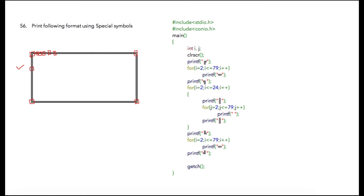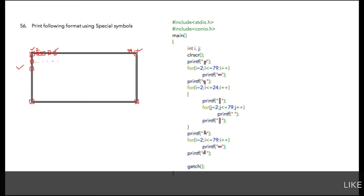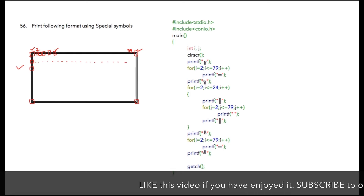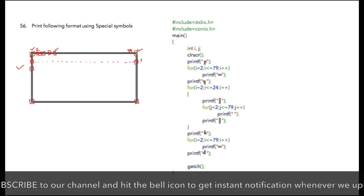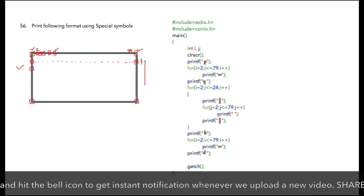To achieve this, we simply print the first ASCII corner character, then from the second location till the 79th location we print the horizontal bar character in a loop. Once that character is printed, we print the closing corner. On the next line, we print the column character followed by spaces using a loop from 2 to 79, then print the column character again.